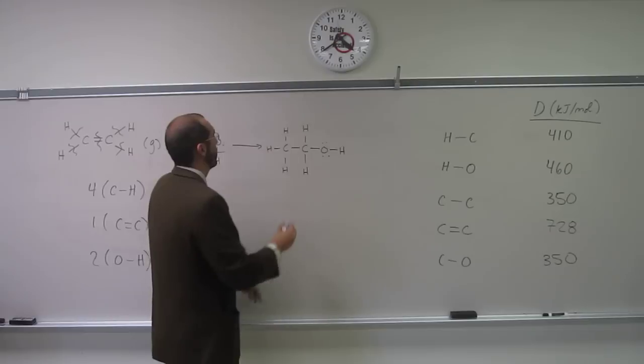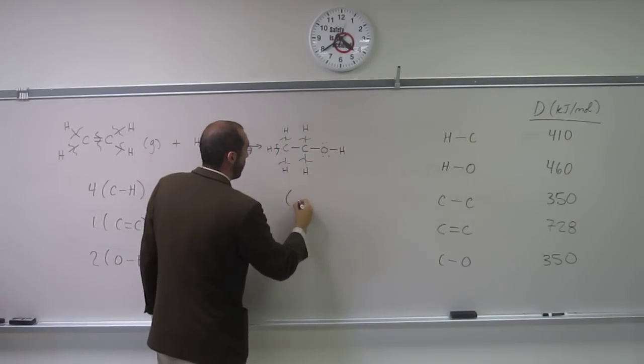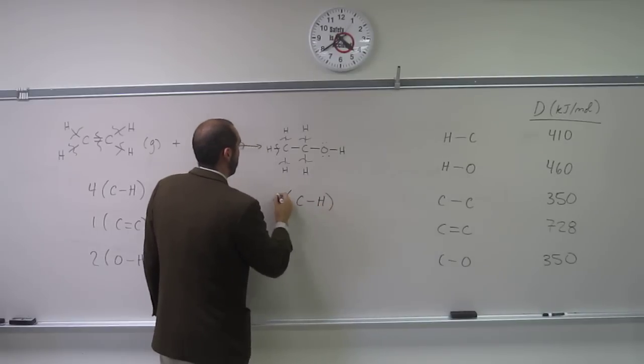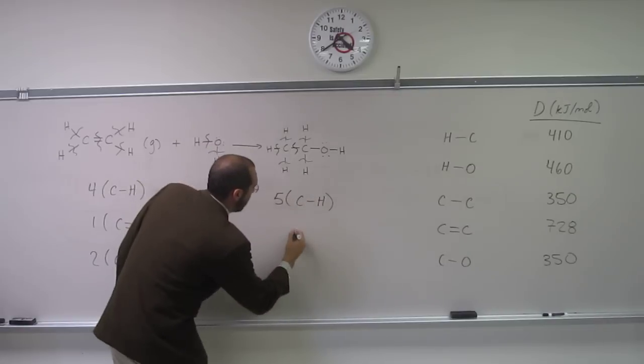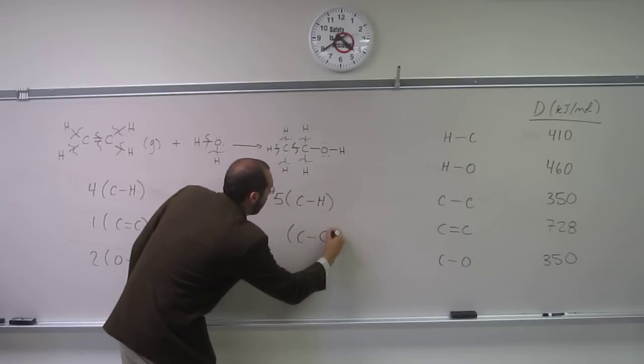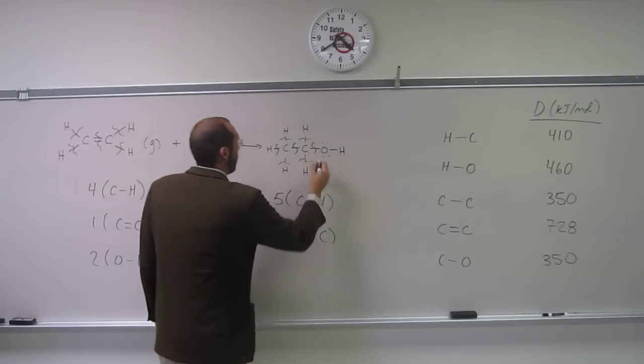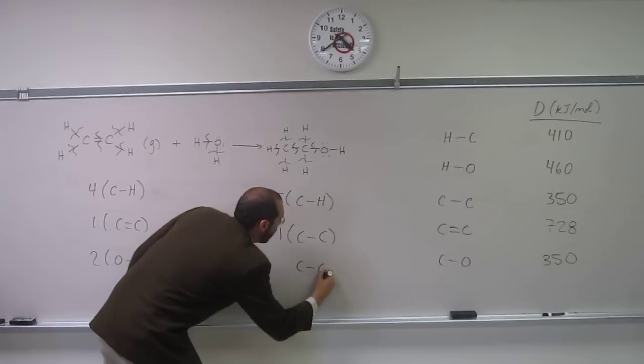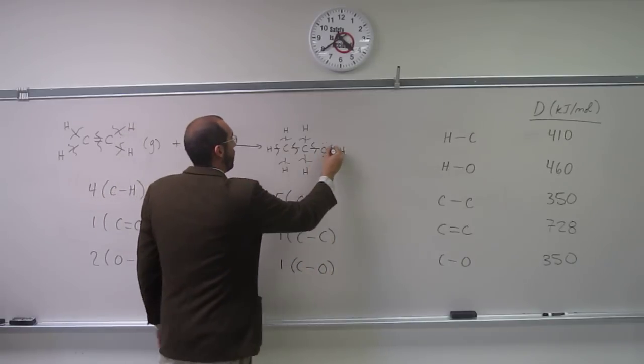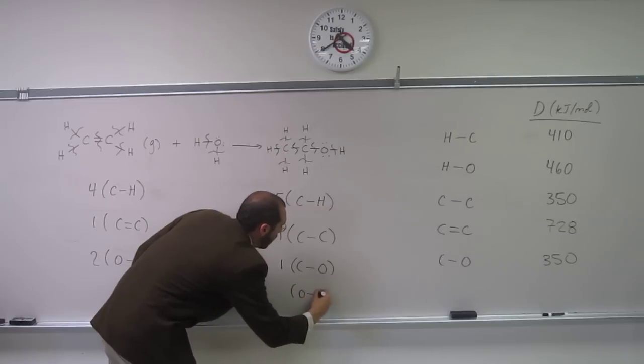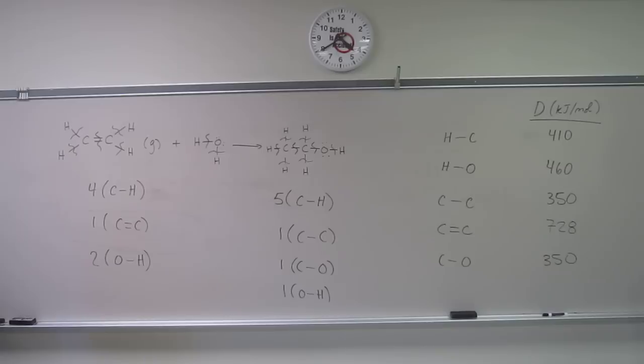In the products we have one, two, three, four, five CH bonds. Like that? We have one CC bond, one CO bond, and one OH bond. Is everybody okay with that?